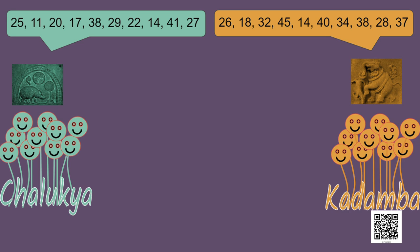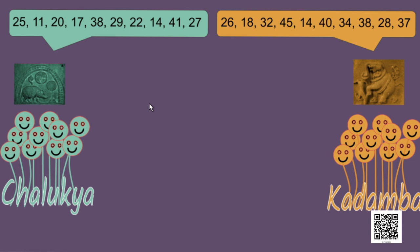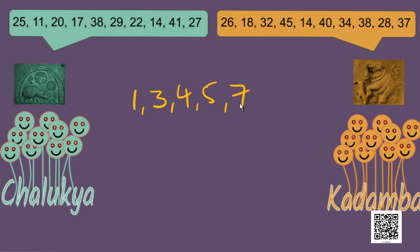They figured out what was happening. Now, children, have you found out how this happened? I will give you a hint. Say we have the numbers 1, 3, 4, 5 and 7. What is their average? The total is 1 plus 3 is 4, 4 plus 4 is 8, 8 plus 5 is 13, 13 plus 7 is 20. So, the total is 20 and we have 5 numbers, so 20 divided by 5 gives an average of 4.